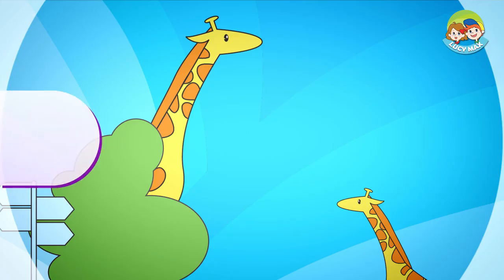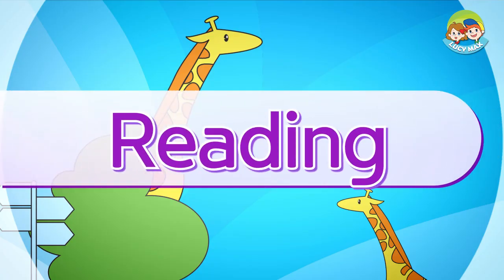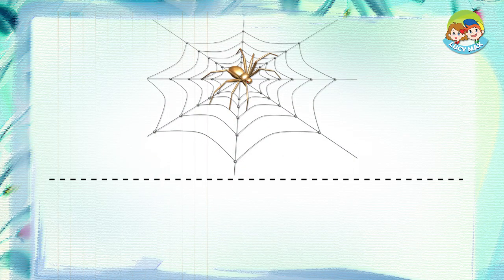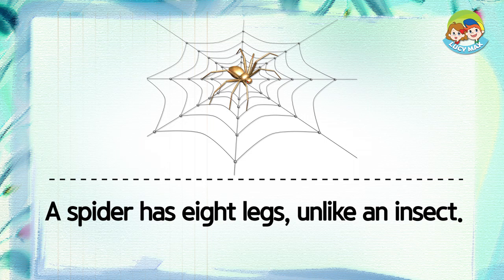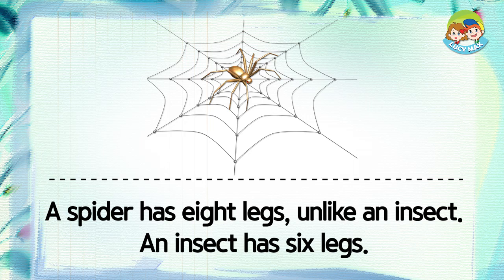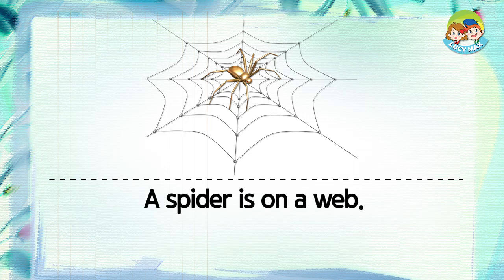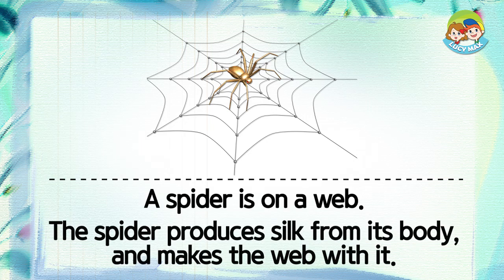Now you will read a story. After you read, you will take a quiz. This is a spider. A spider has eight legs, unlike an insect — an insect has six legs. A spider is on a web. The spider produces silk from its body and makes the web with it.